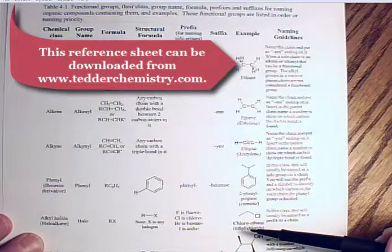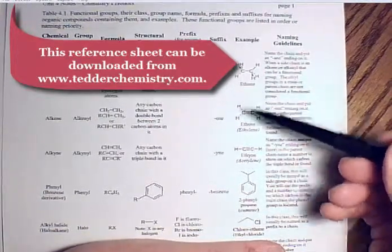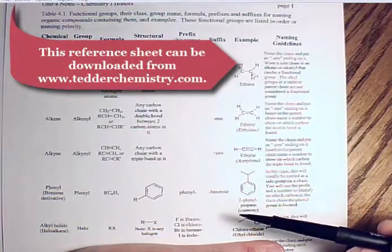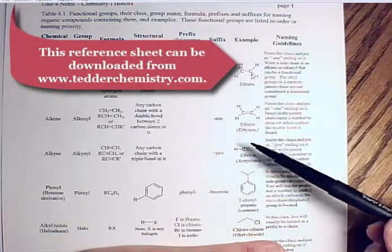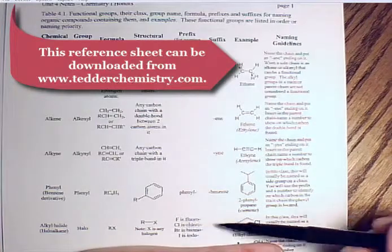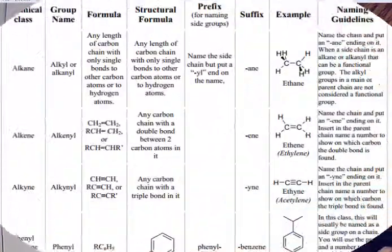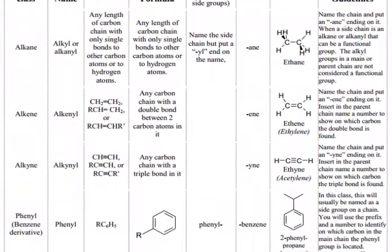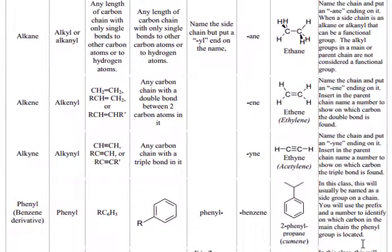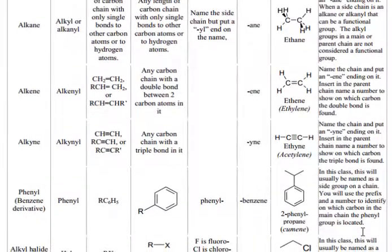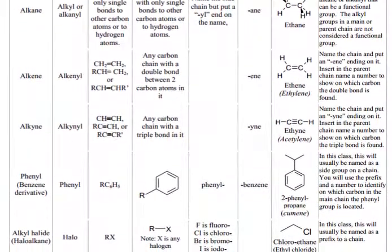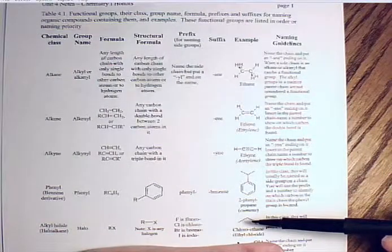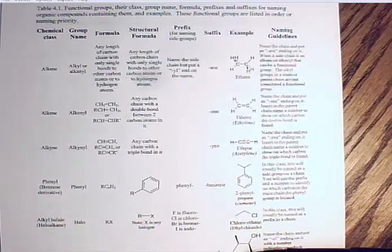In terms of numbering a carbon chain, all functional groups including alkyl halides are considered to have the same importance for numbering. That is, if you have a double bond, triple bond, phenyl group, benzene ring, or a fluoro group, you find the sum of all the numbers for the carbons on the chain to all the functional groups, and number from the end of the chain that gives the lowest sum. This applies up to and including alkyl halides.